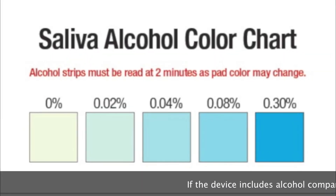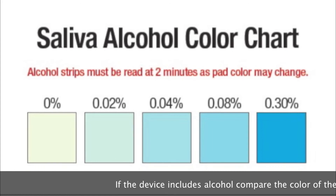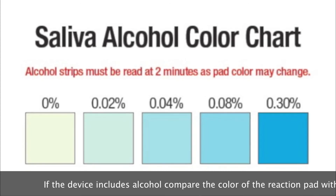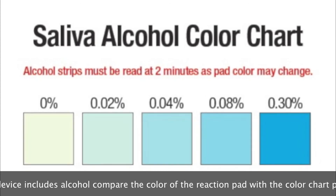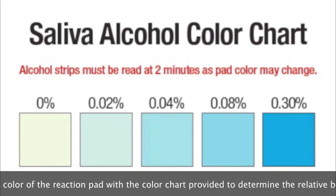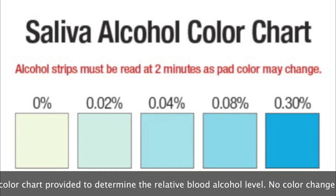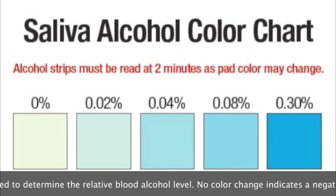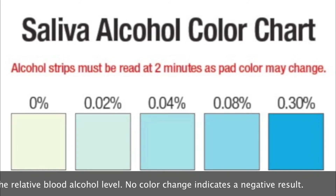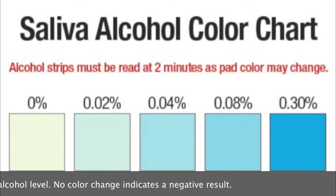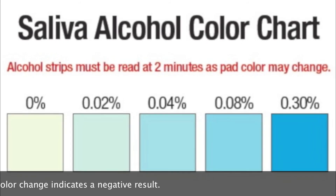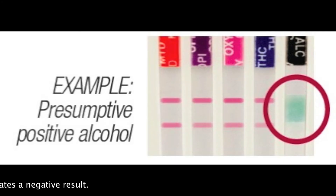Step 4: If the device includes alcohol, compare the color of the reaction pad with the color chart provided to determine the relative blood alcohol level. No color change indicates a negative result. Here's an example for testing positive for alcohol.